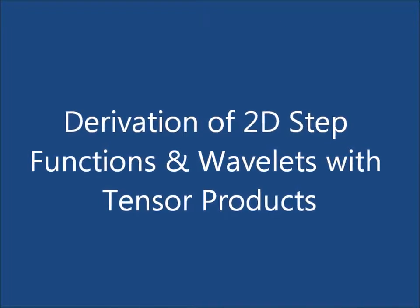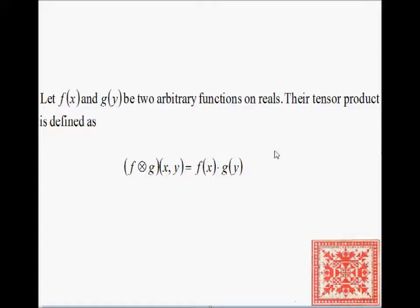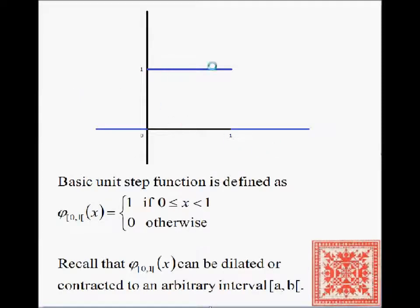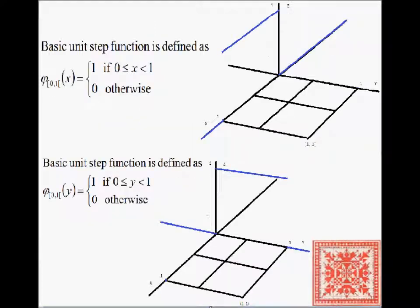Let's use tensor products to transition into two-dimensional space. To review: the tensor product of two arbitrary functions of one argument is their product. This is the basic unit step function — zero, then jumping to one, then back to zero and on to positive infinity.